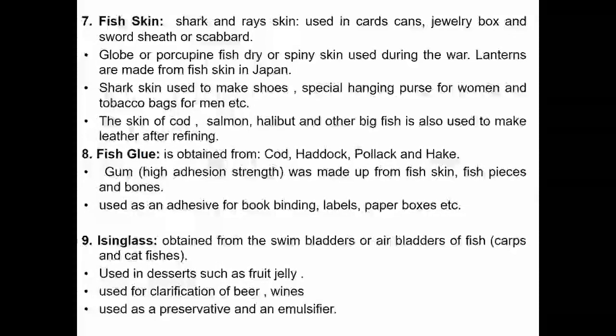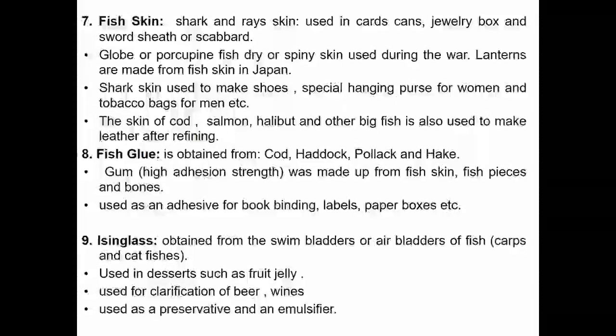Fish glue is obtained from cod, haddock, pollock and hake. It is partly a gum made from fish skin, fish pieces and bones. It is used as an adhesive for book binding, labels, paper boxes, etc.